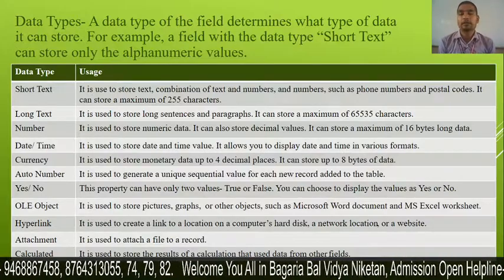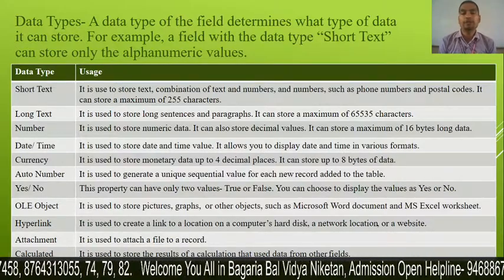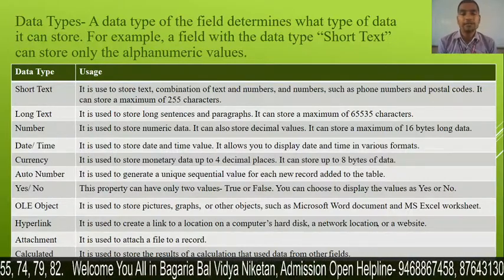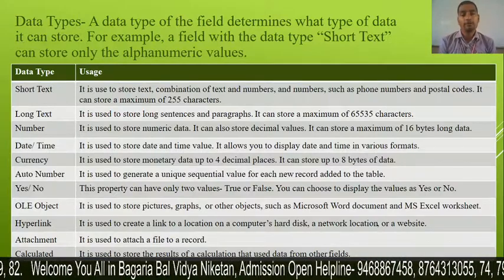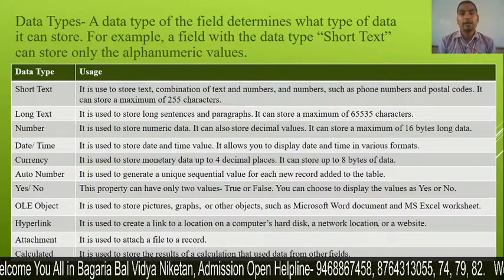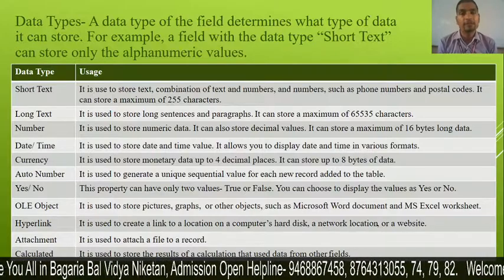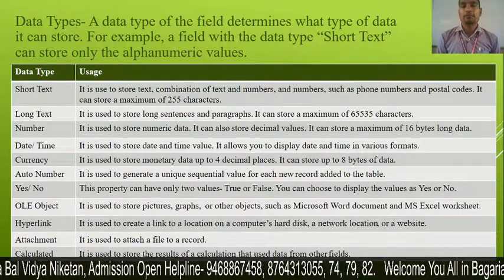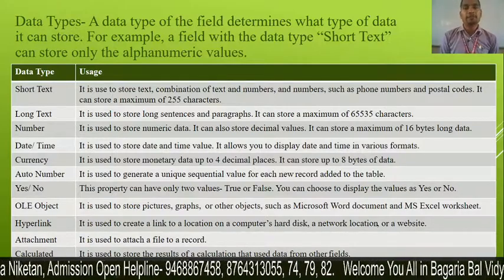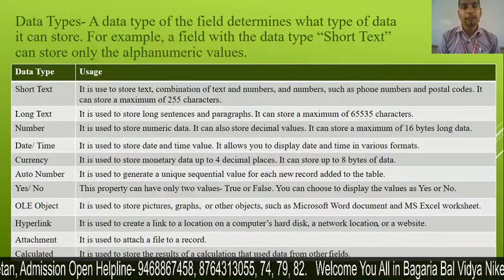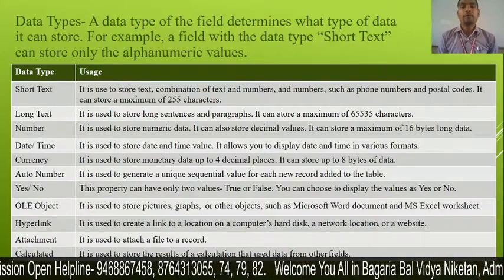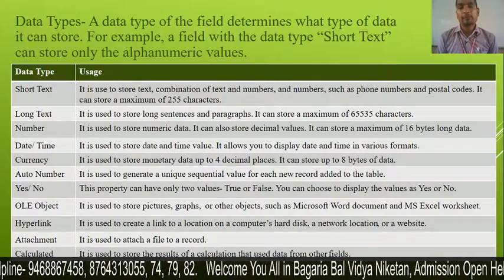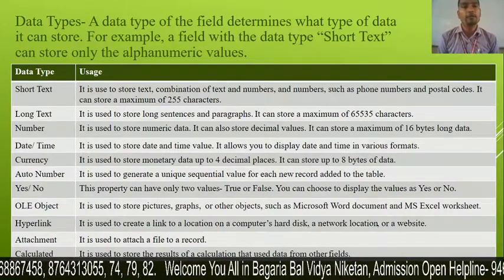Next is AutoNumber. It is used to generate a unique sequential value for each new record added to the table. The auto number is automatically inserted in sequence, like 1, 2, 3, 4. It will not repeat itself. We can also make this field a primary key.